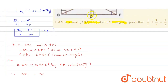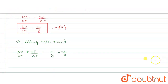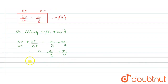Now, BD plus DF equals BF, so BF upon BF equals 1. Therefore, 1 equals z upon y plus z upon x. Dividing both sides by z, we get 1 upon z equals 1 upon x plus 1 upon y. This is our required answer.